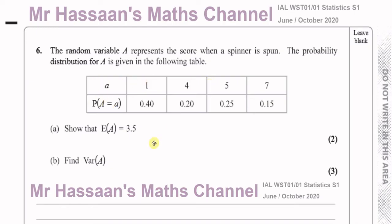Question number 6 is about discrete random variables. A random variable A represents a score when a spinner is spun. The probability distribution for A is given in the following table. This spinner has the numbers 1, 4, 5 and 7 on it. The probability of landing on a 1 is 0.4, the probability of landing on a 4 is 0.2, and so on. It says show that E(A) is equal to 3.5 — the expected value, also known as the mean of A, is 3.5.